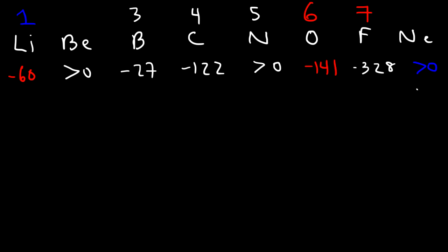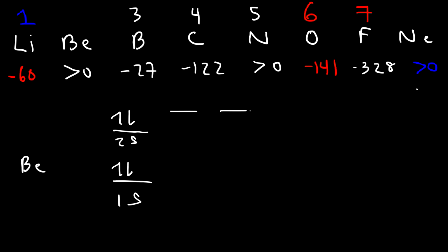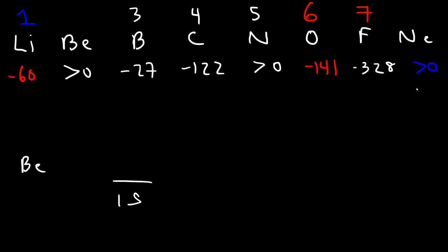Why are alkaline earth metals endothermic while group 3 is exothermic? If we look at beryllium, its configuration is 1s² 2s². To add an electron you have to place it in a higher energy level — the 2p orbital. Whenever you place an electron in a higher energy level you have to put energy into the system. That's why some alkaline earth metals are endothermic — you're forcing an electron into a higher orbital.